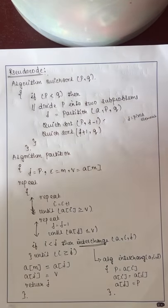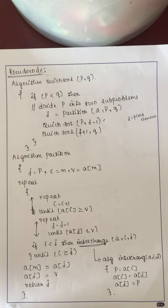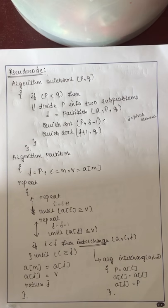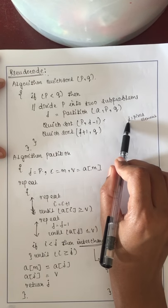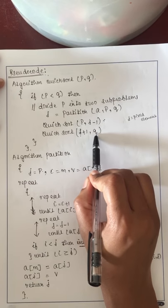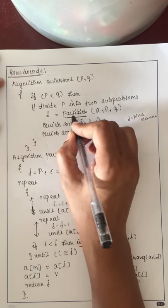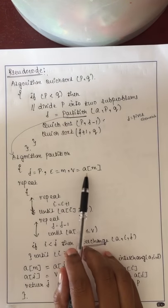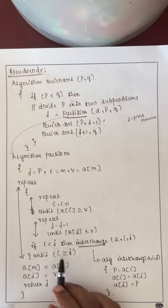Now we will discuss the pseudo-code. This is the algorithm for quicksort. The first step is dividing the problem into two sub-problems by changing the location of the pivot element, which causes the array to split into two sub-arrays. Elements to the left of the pivot form one sub-array and elements to the right form another. This partitioning is done through the partition algorithm, where v is the pivot element.